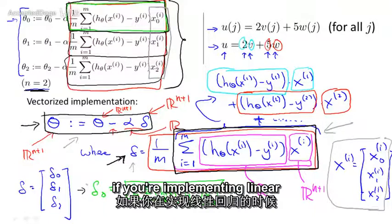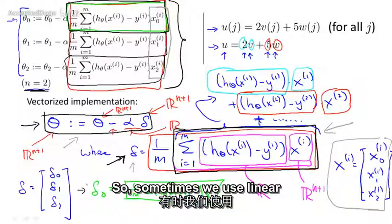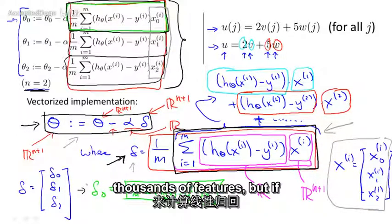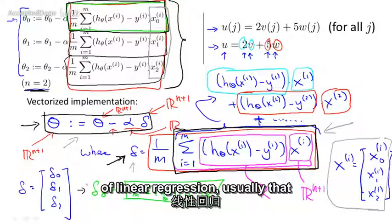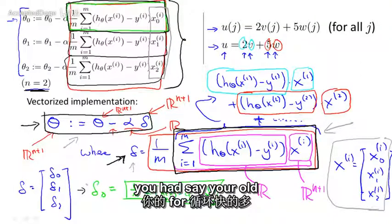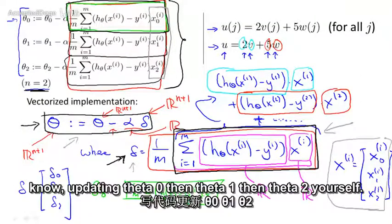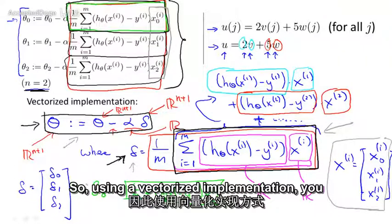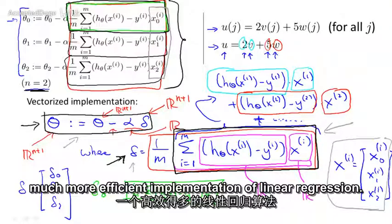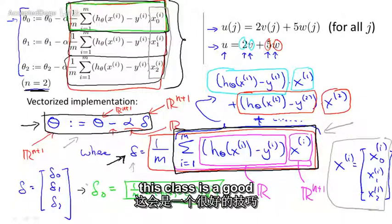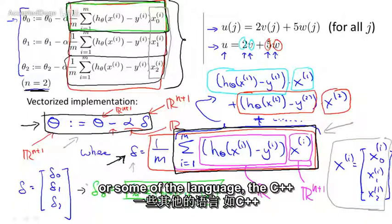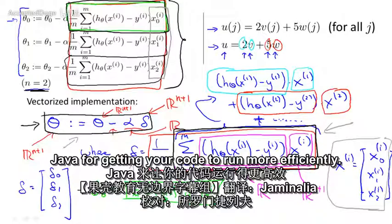And finally, if you are implementing linear regression using more than one or two features, so sometimes we use linear regression with tens or hundreds or thousands of features. But if you use the vectorized implementation of linear regression, usually that will run much faster than if you had, say, your old for loop that was updating theta 0, then theta 1, then theta 2 yourself. So using a vectorized implementation, you should be able to get a much more efficient implementation of linear regression. And when you vectorize later algorithms that we'll see in this class, it's a good trick, whether in Octave or some other language like C++ or Java, for getting your code to run more efficiently.